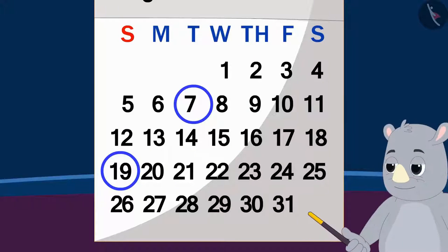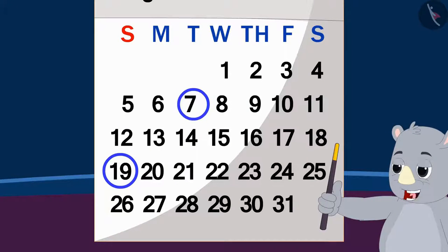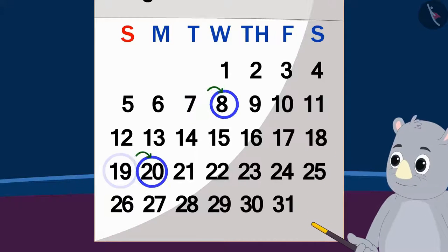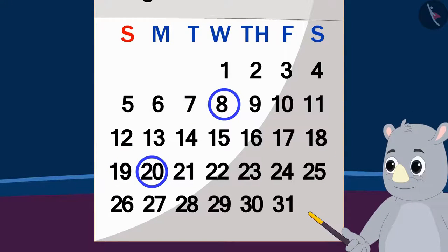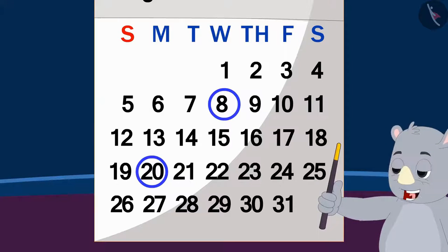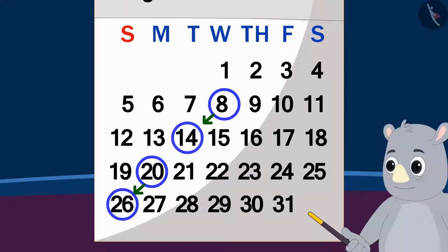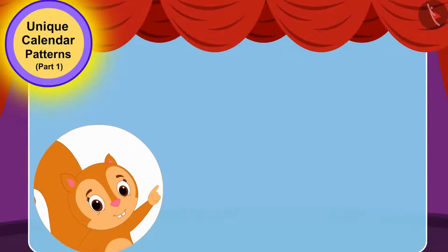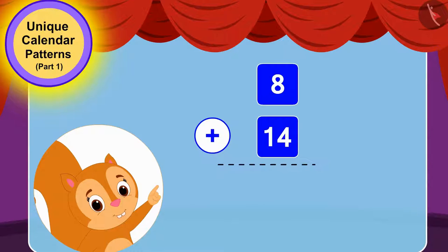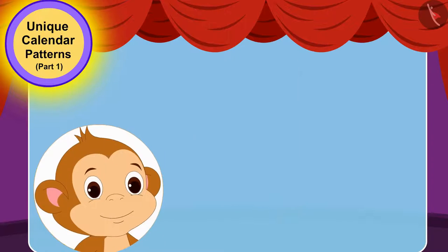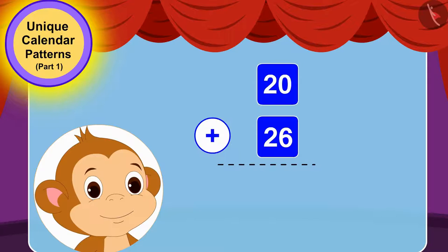Now Gagu told Chanda and Babban that they had to take the next date from their chosen date and add it with the number written diagonally in the backward direction. Chanda quickly added 8 and 14 and got the answer as 22 again. And Babban too, by adding 26 to 20, got the number 46 itself again.